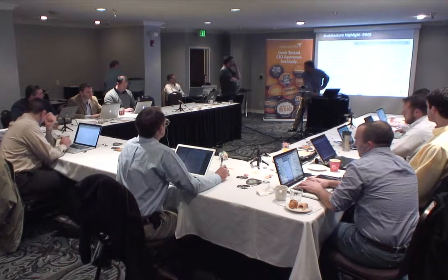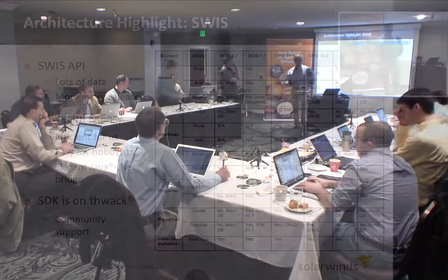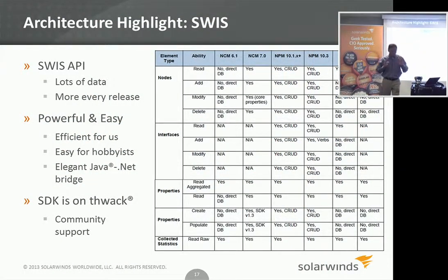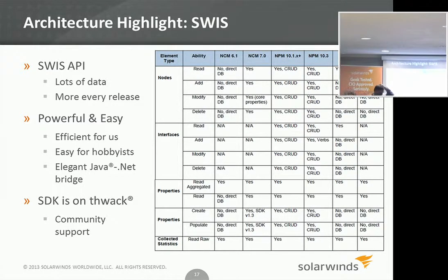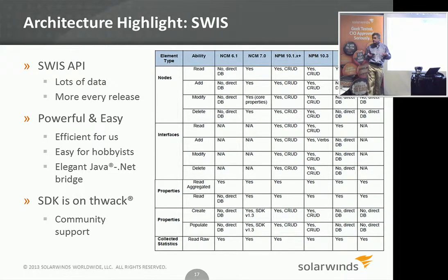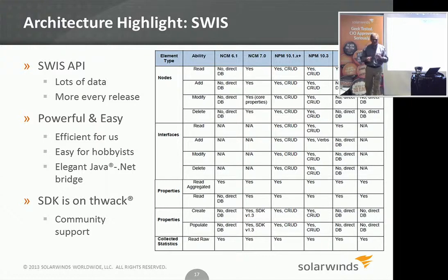Why don't we spend a few minutes on the Swiss API? I think we've had a few things around the API and the SDK. So everything I've showed you is basically UI-related. What we have in Orion is something called Swiss, which stands for SolarWinds Information Service. That's a SOAP type API and we're working on a REST version of the same, but right now it's mostly SOAP.